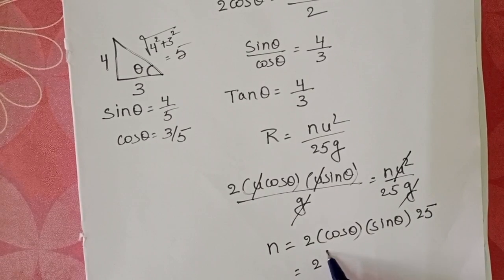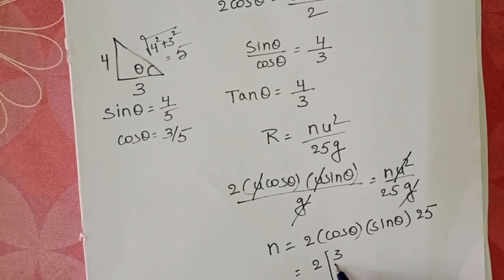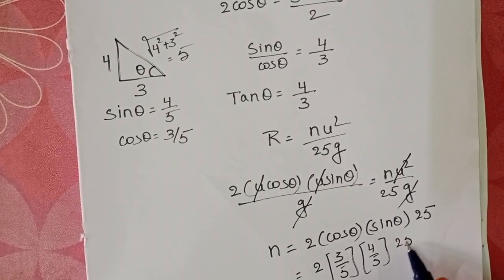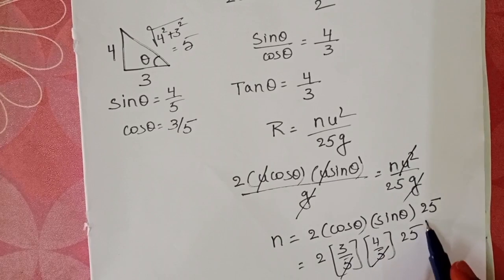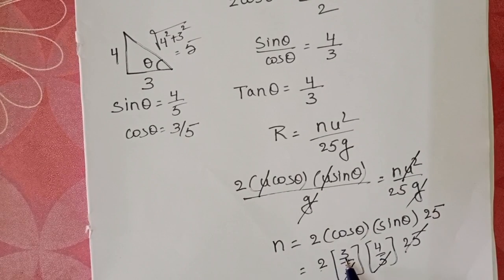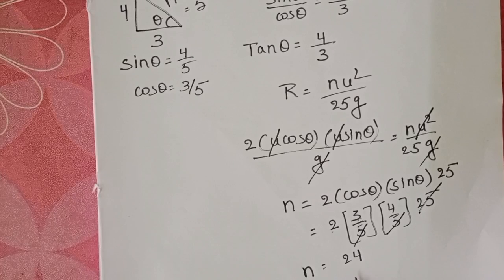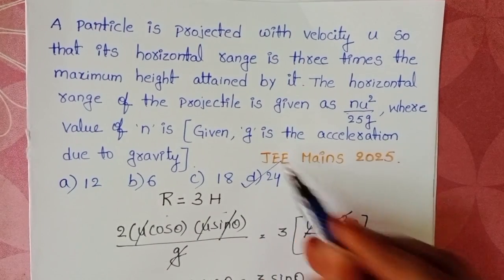Substitute the values: cosθ is 3/5 and sinθ is 4/5 into 25. 5 times 5 is 25, get cancelled. 2 into 3 is 6, 6 into 4 is 24. So the value of n is 24. Fourth option is correct.